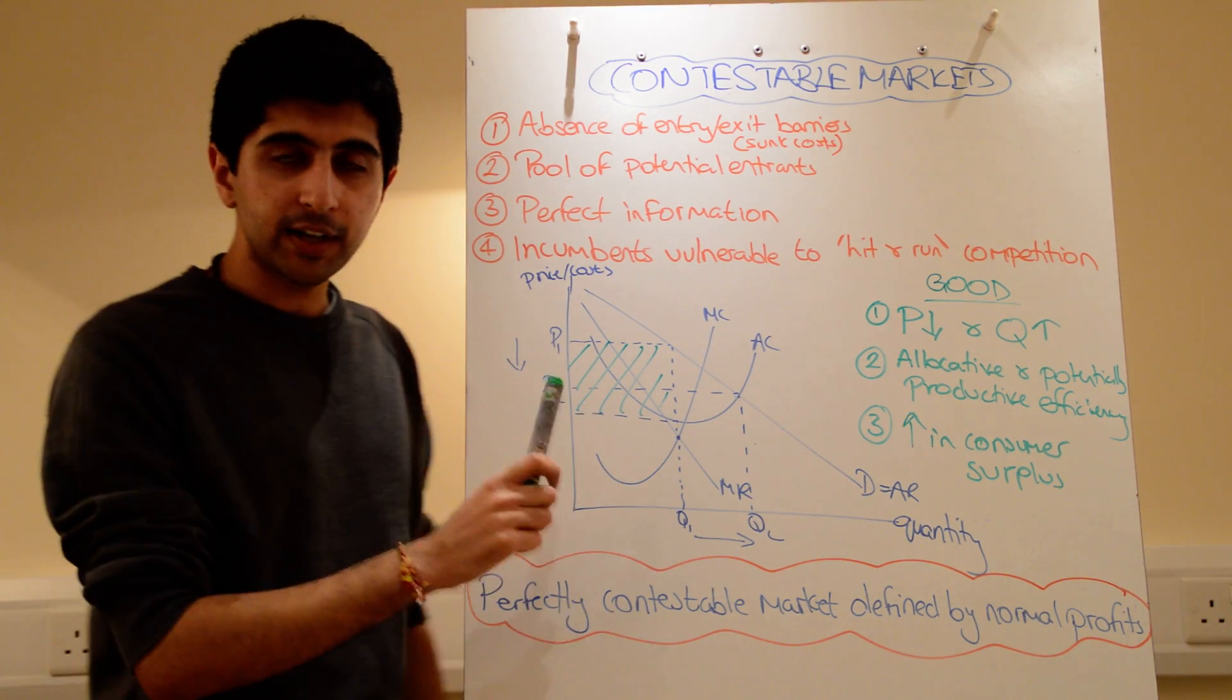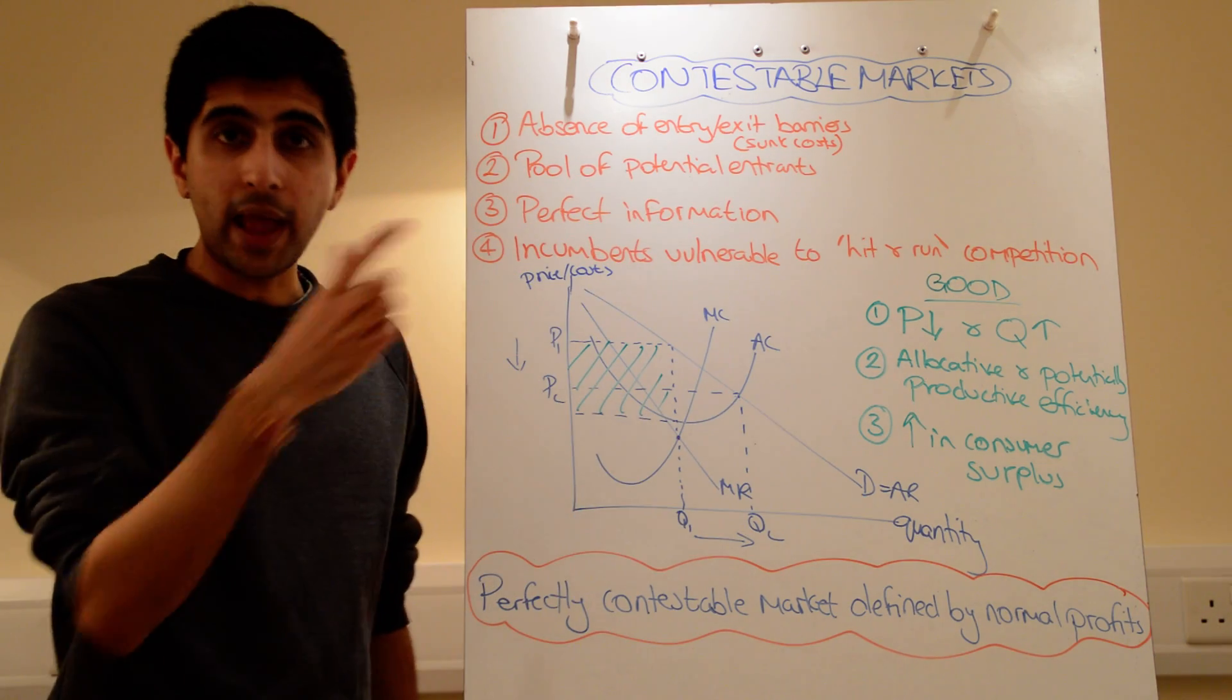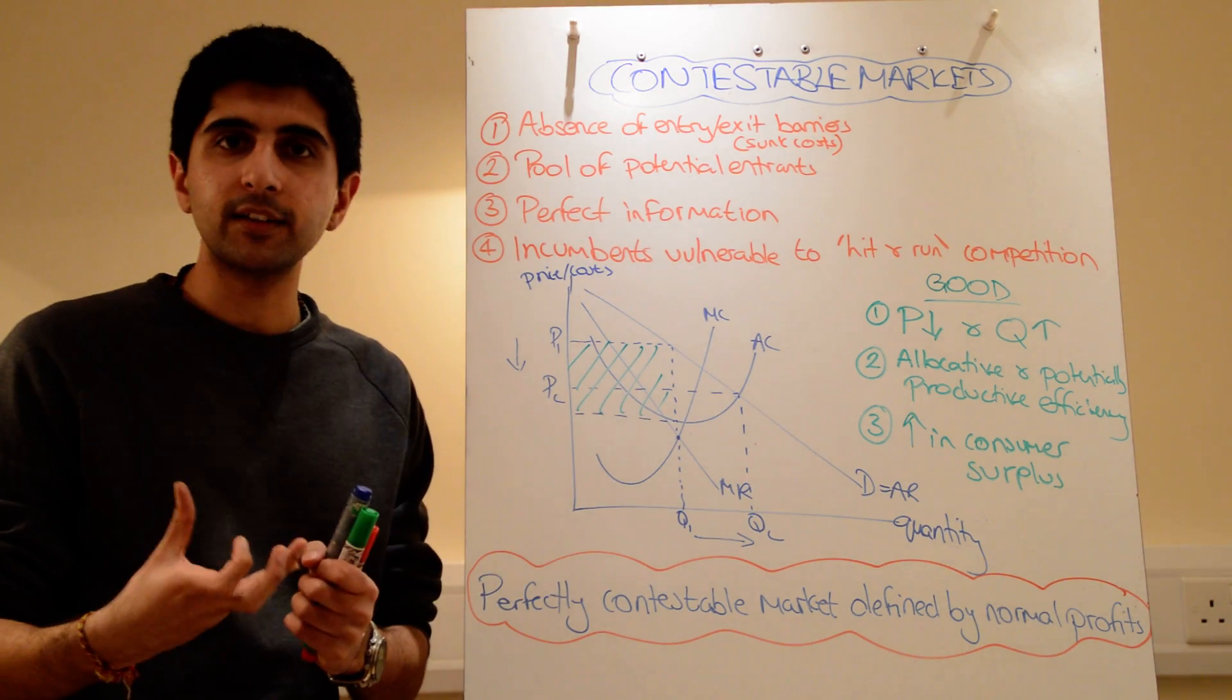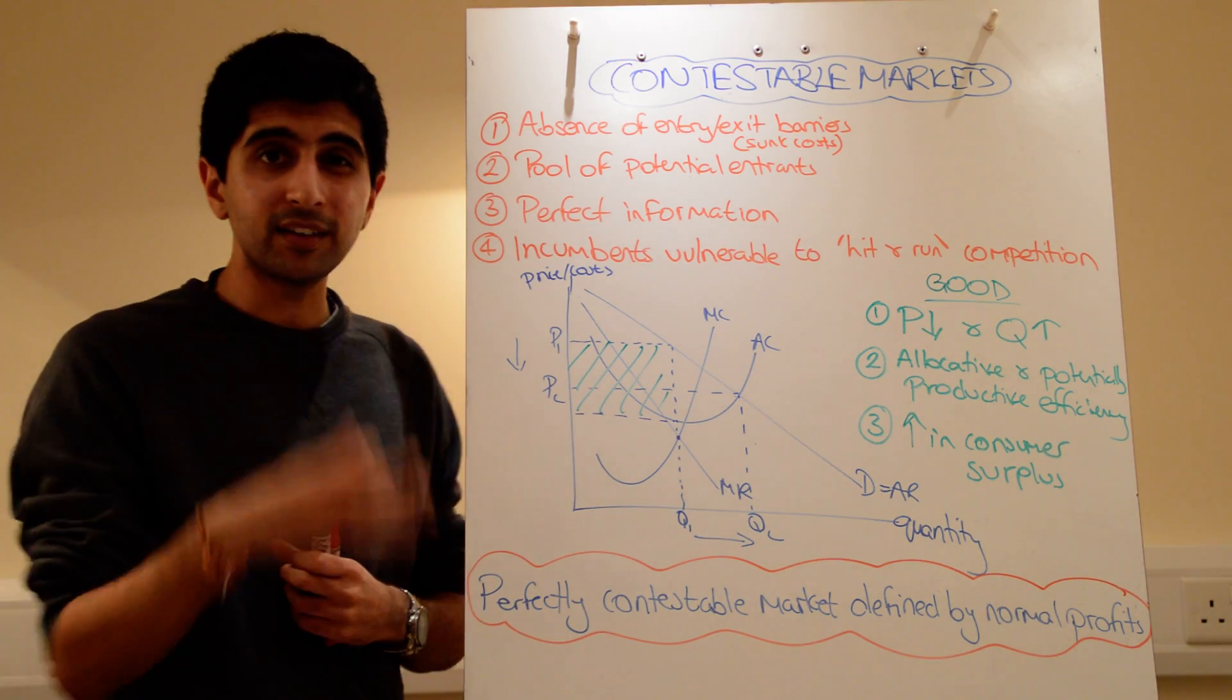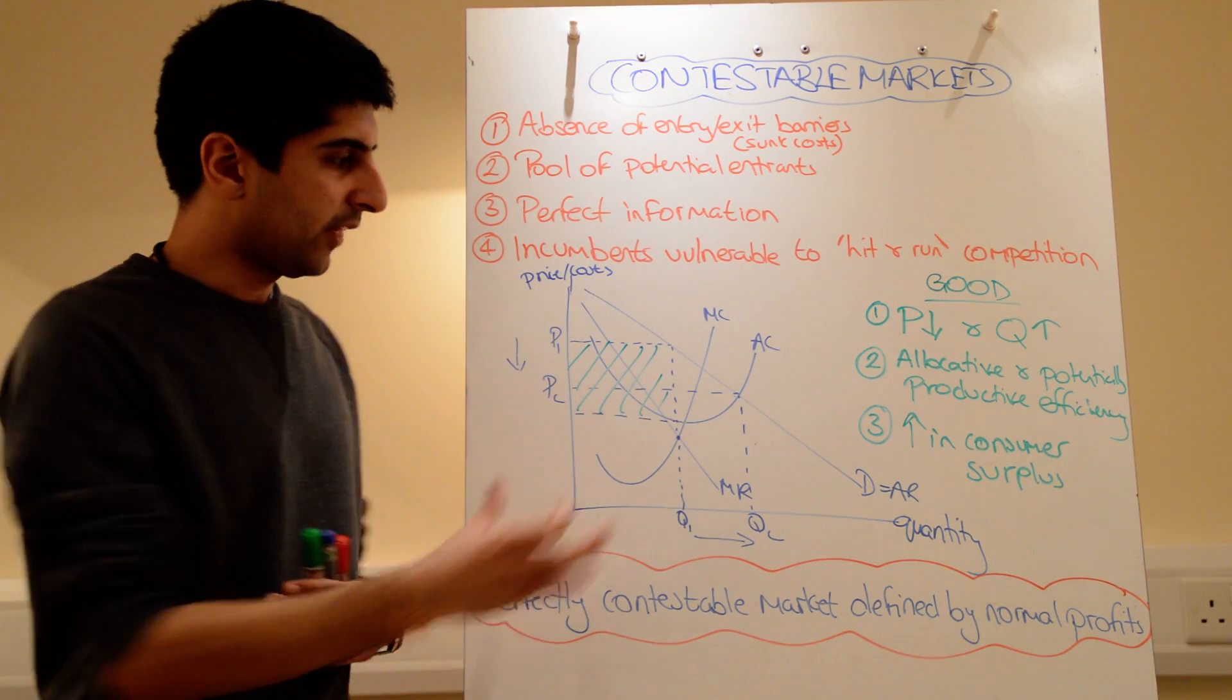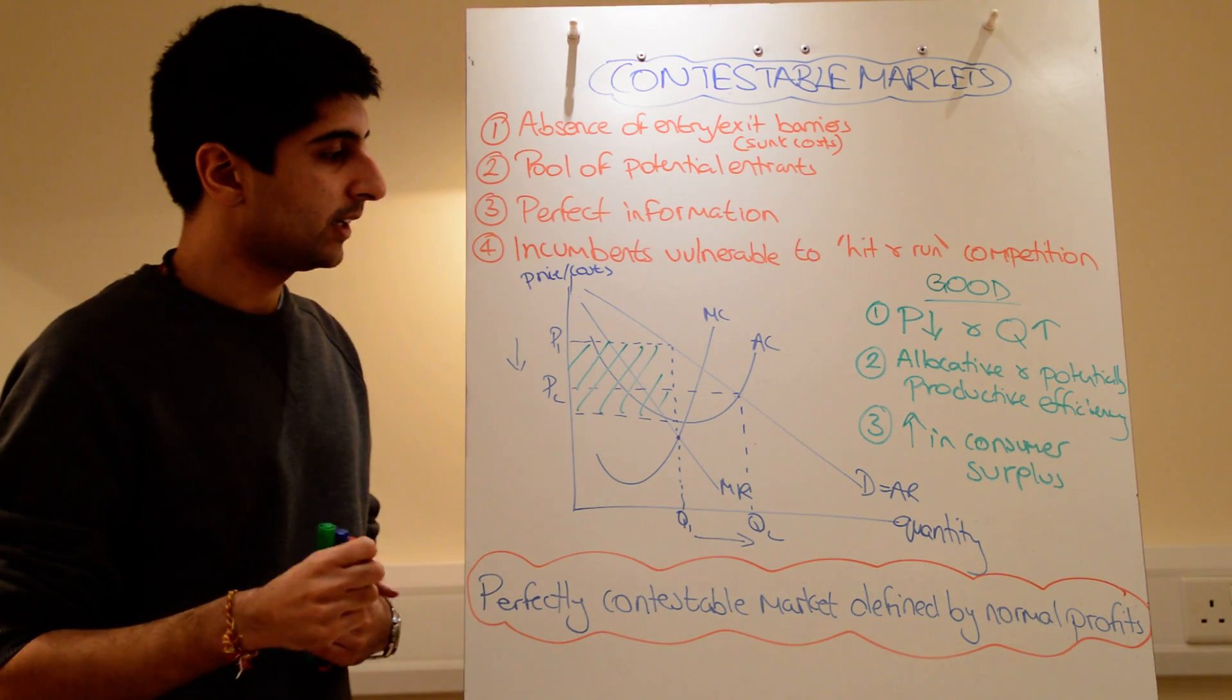The problem in a perfectly contestable market is that there are no entry barriers or exit barriers. So these supernormal profits are going to attract a lot of new entry, or at least there's going to be a huge threat of new entry. There's going to be loads and loads of potential entrants in there that are looking at these amazing supernormal profits and thinking, I want some of that.